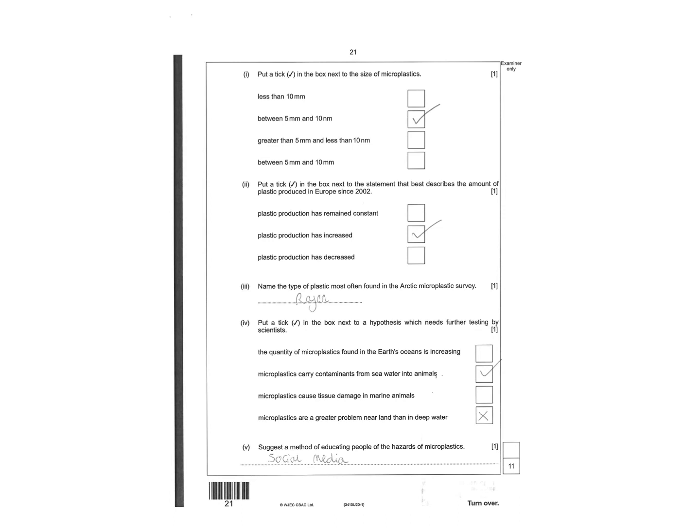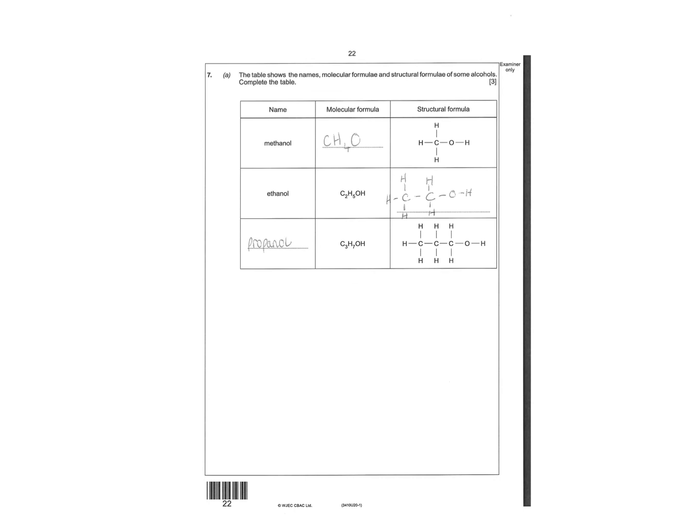Molecular formula: how many carbons - one, how many hydrogens - four, how many oxygens - one. Draw it out. Remember carbon has four bonds, oxygen has two, hydrogen has one. Name it. So it's one, two, three - propan. It's all propanol.